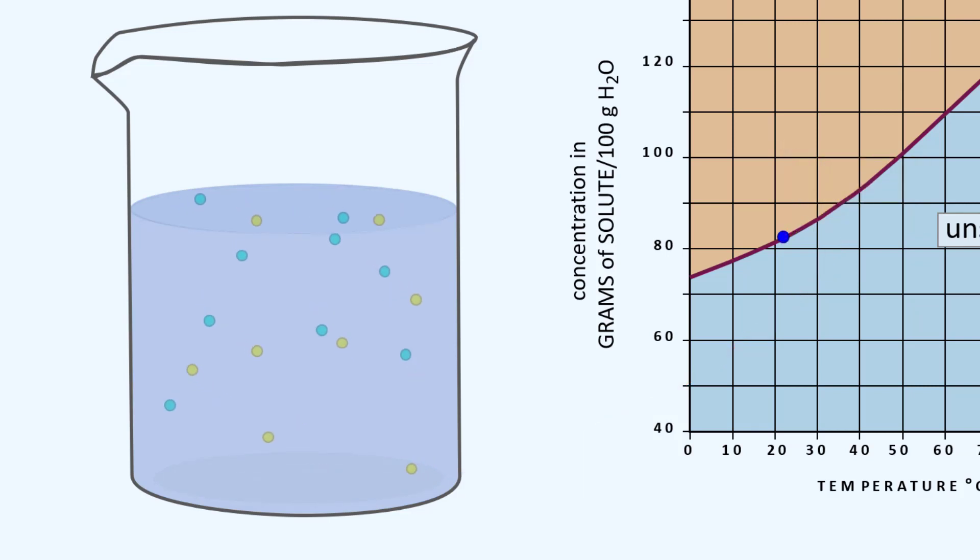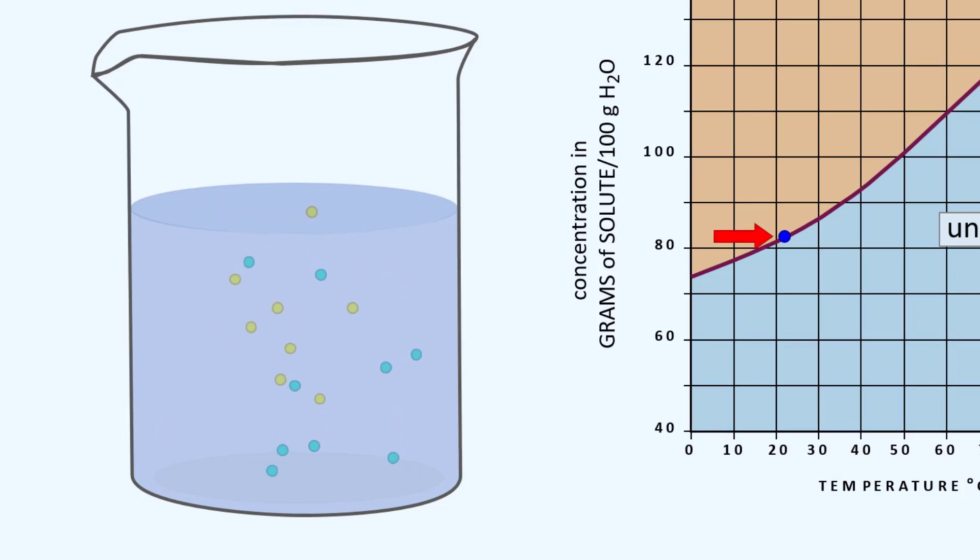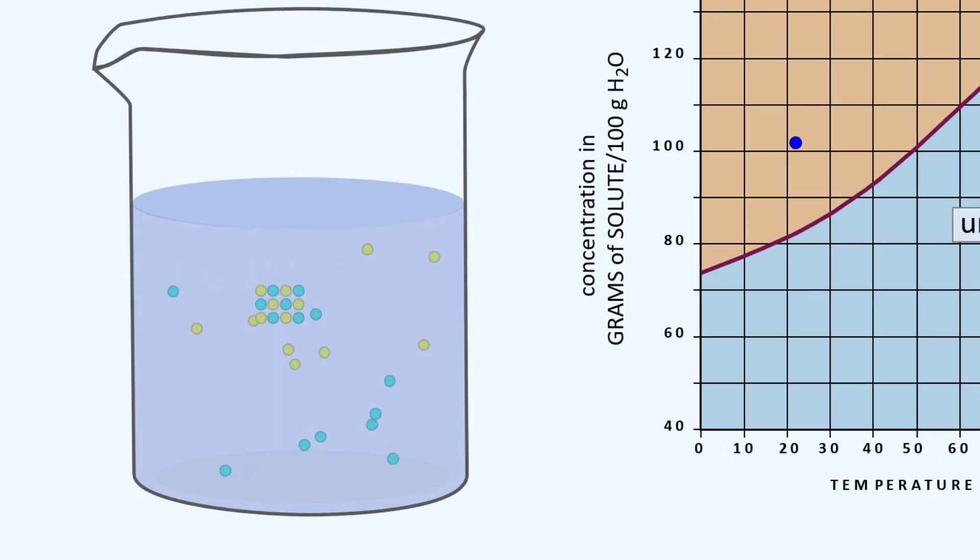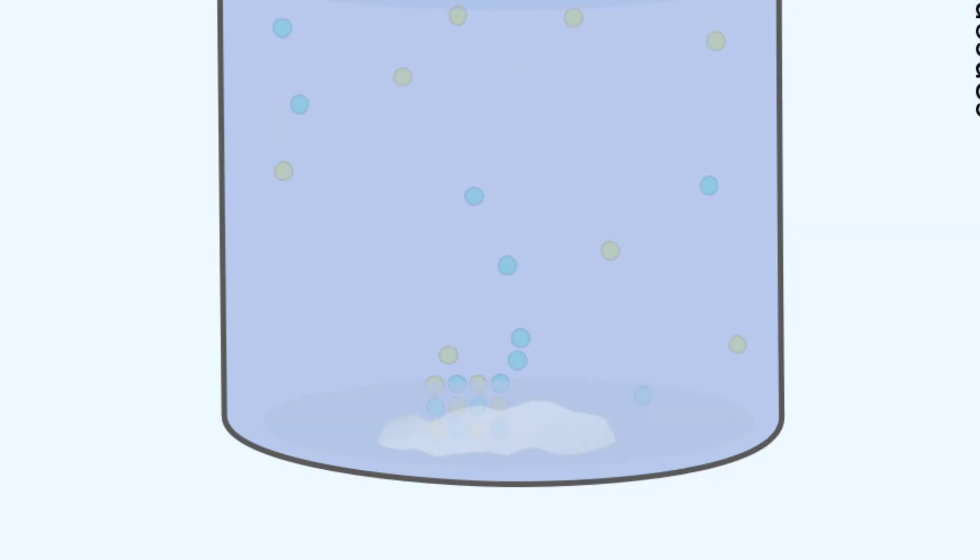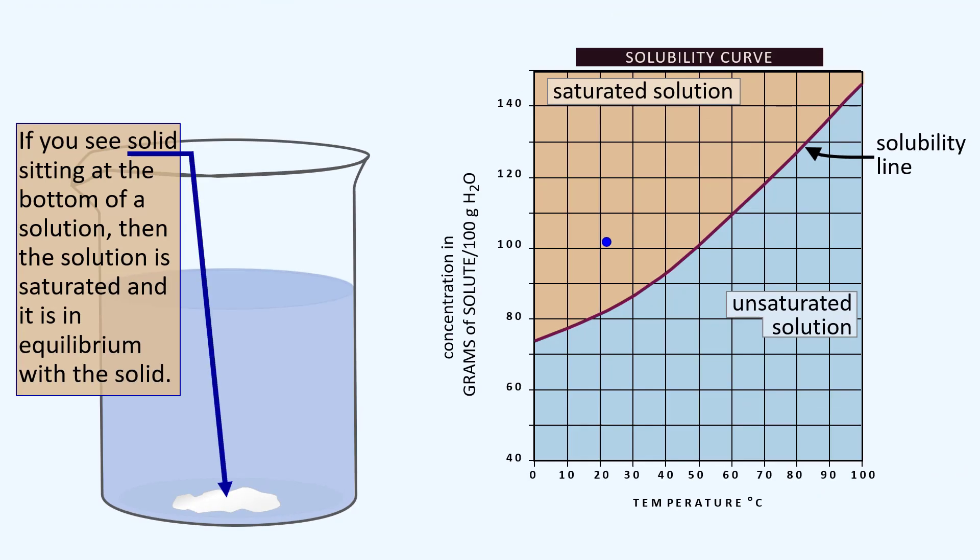But what's really going on here? That additional solute actually does dissolve. The particles in that solid continually go into solution while particles in solution continually join the crystal. It keeps going back and forth, but the total amount of solid remains virtually constant. So on a macro scale we don't see any change in the solid. If you see solid sitting at the bottom of a solution, then the solution is saturated and it is in equilibrium with the solid. The amount of solid that dissolves into solution is equal to the amount of dissolved particles that join the crystal. That is our equilibrium.